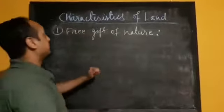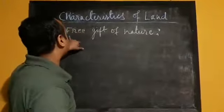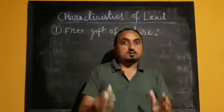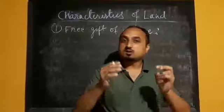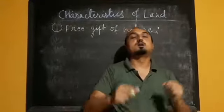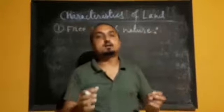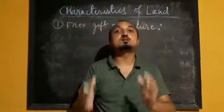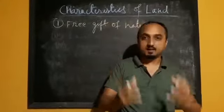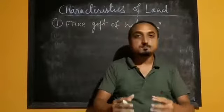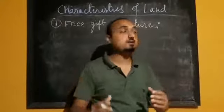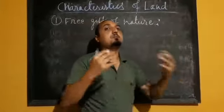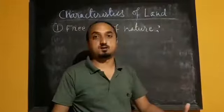The first characteristic: land consists of free gifts of nature. The different mineral resources, surface of the earth, water, sunlight — these all are the free gifts of nature, and man has to spend nothing to obtain them. These are things provided by our nature free of cost, that's why it is called free gifts of nature.